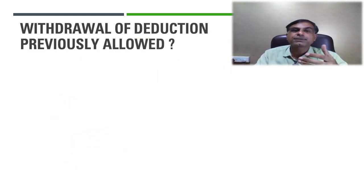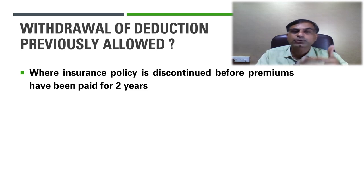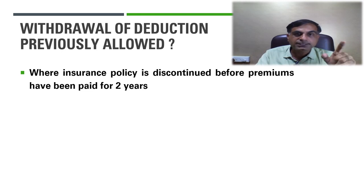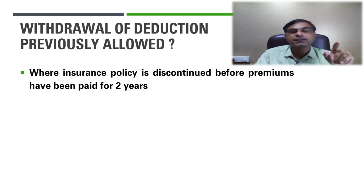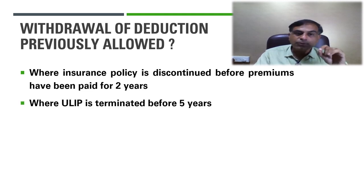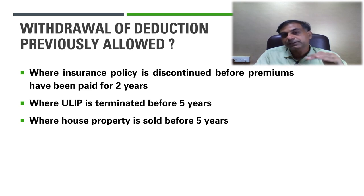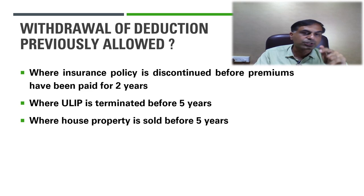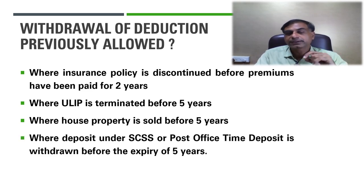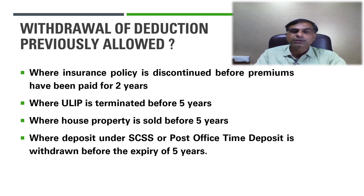One more point: withdrawal of deduction previously allowed. In certain special circumstances, a deduction already granted can be reversed. For example, if you discontinue an insurance policy before paying two years' premium, the deduction claimed in the first year becomes taxable in the second year. If a ULIP policy is terminated before 5 years, the Section 80C deduction taken for ULIP contributions is reversed. If the house property is sold or transferred before 5 years, the deductions claimed for that property become taxable. Similarly, if a Senior Citizen Saving Scheme or post office time deposit is broken before 5 years, the deduction previously allowed is disallowed and becomes taxable.